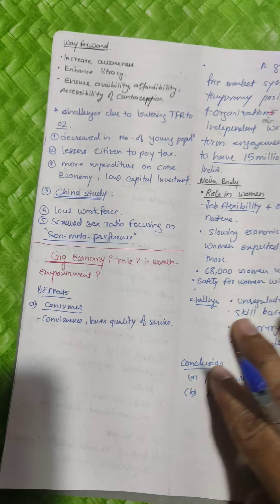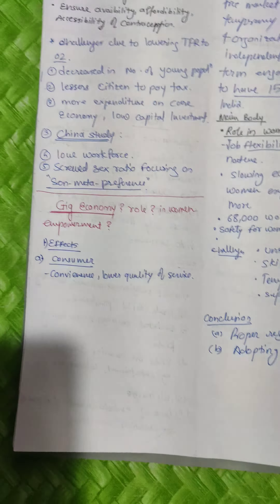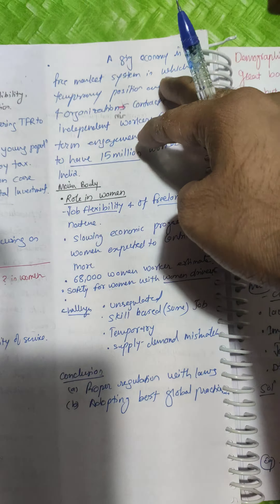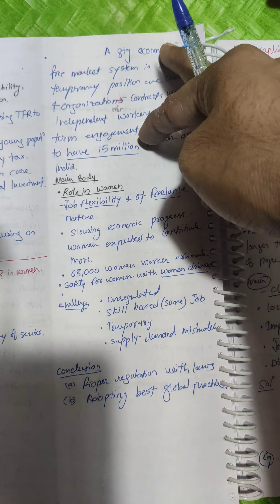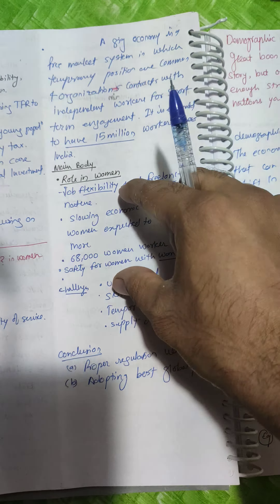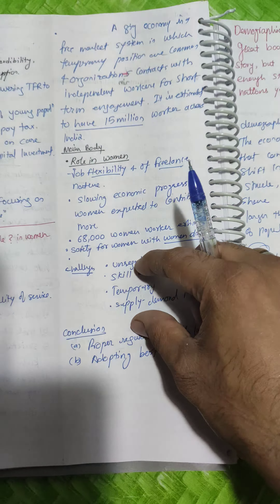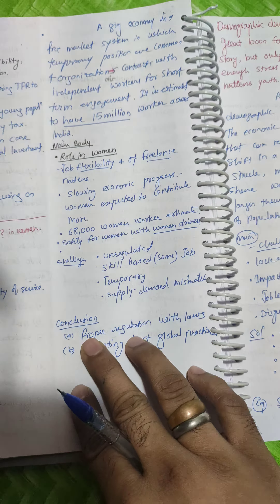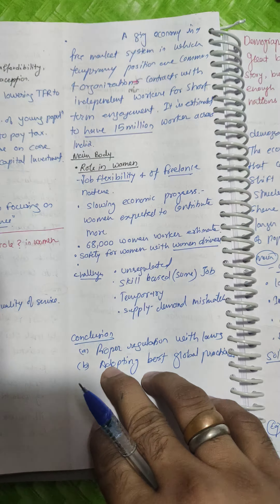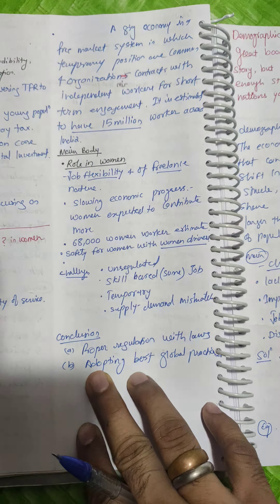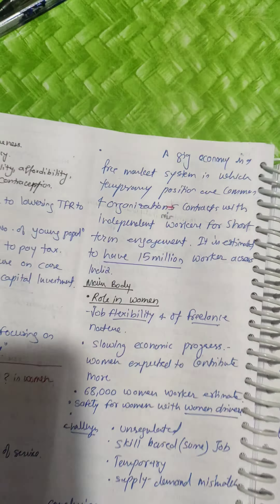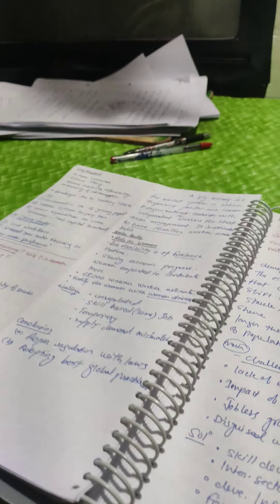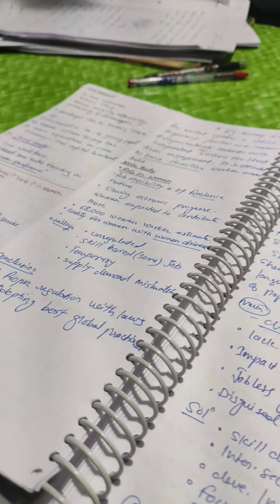Similarly, you are going to do this type of format: if there is gig economy, first word is gig economy, then role of government, what are the challenges, and what can be the solution. This is what comes into that, so keep it linked.